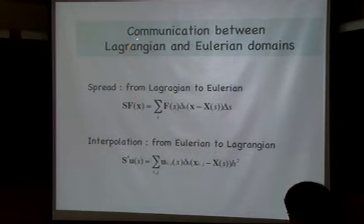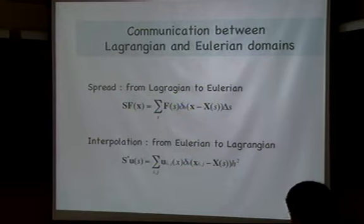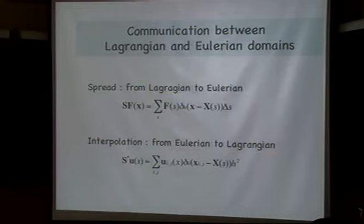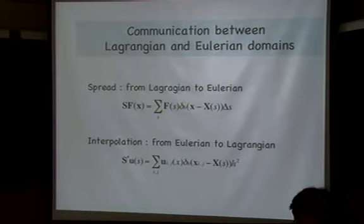The communication between Lagrangian and Eulerian domains comes from the spreading operator from Lagrangian to Eulerian domain. The Lagrangian force term is transmitted and spread onto the Eulerian domain, and based on the interpolation operator, the velocity vector field is lifted onto the Lagrangian domain. The spreading and interpolation operators have an adjoint relationship, easily shown through the power relationship between Lagrangian and Eulerian domains.